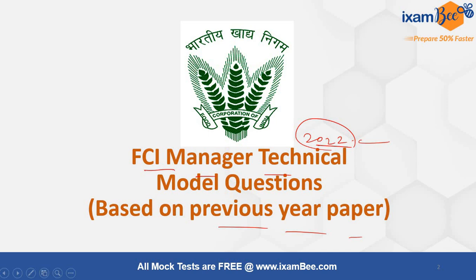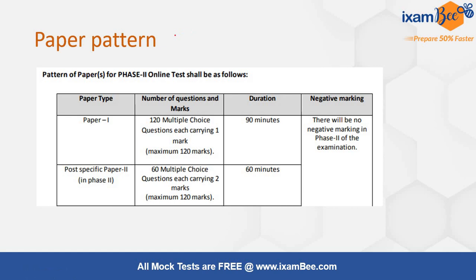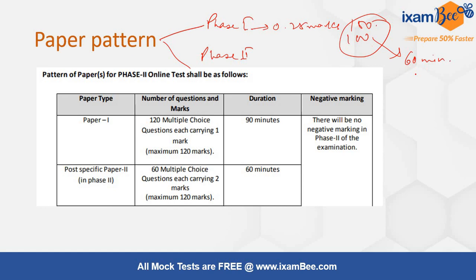Let's see the paper pattern first. The paper will be in two phases, phase 1 as well as phase 2. Phase 1 will have negative marking of 0.25 marks. The total marks will be 100 for 100 questions and the time duration will be only 60 minutes, that is 1 hour. For phase 1, there will be 4 sections: English, Quant, Reasoning, and GS.